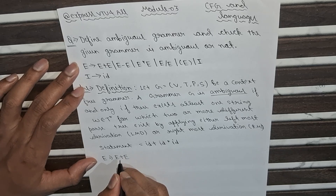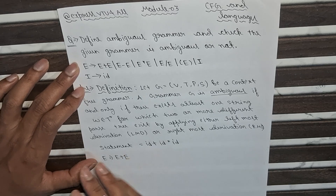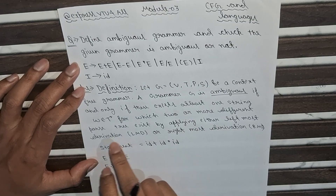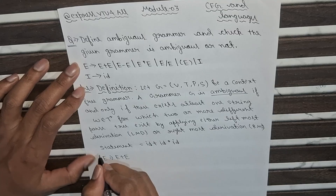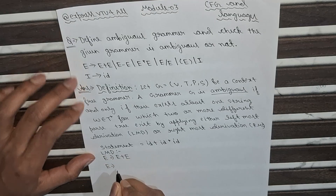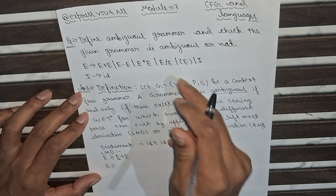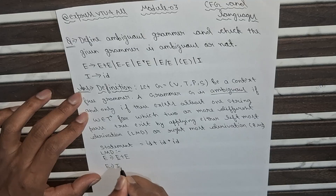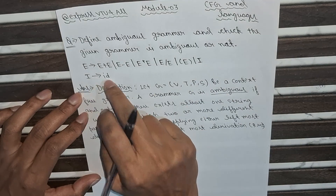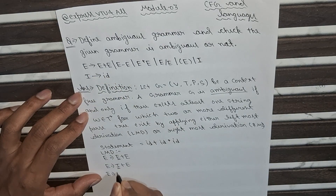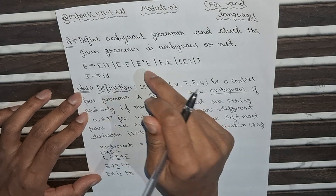We will use LMD to derive the statement. Starting from E, using E → E + E, we replace the leftmost E with I, getting I + E. Since I is also a variable with production I → ID, we get ID + E. Now we apply E → E * E, giving ID + E * E.